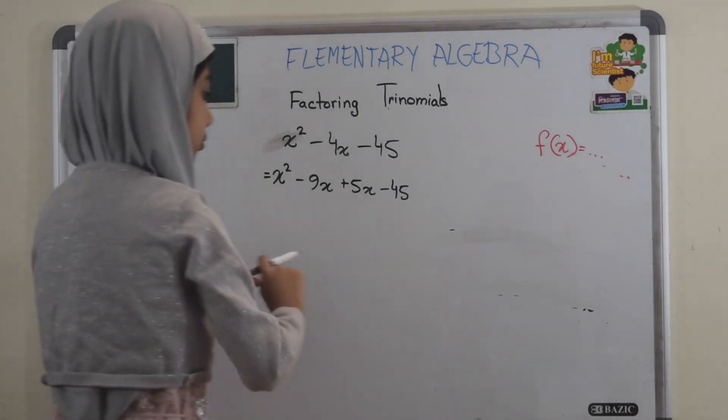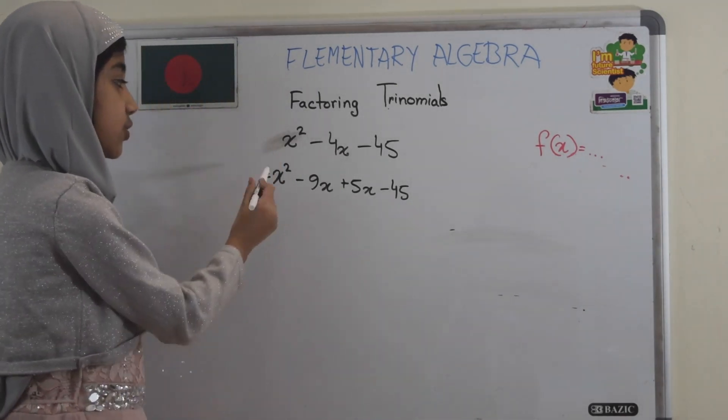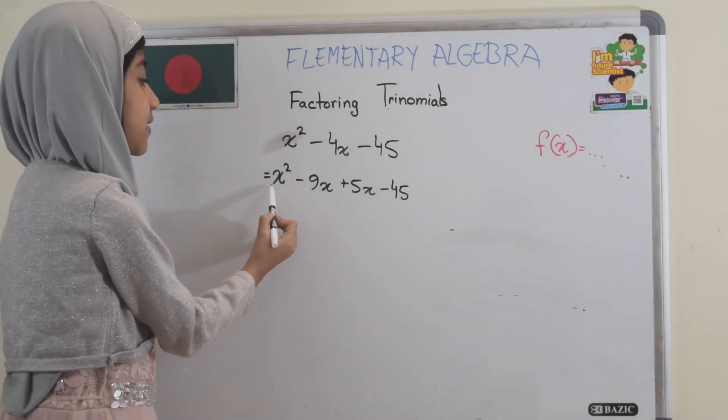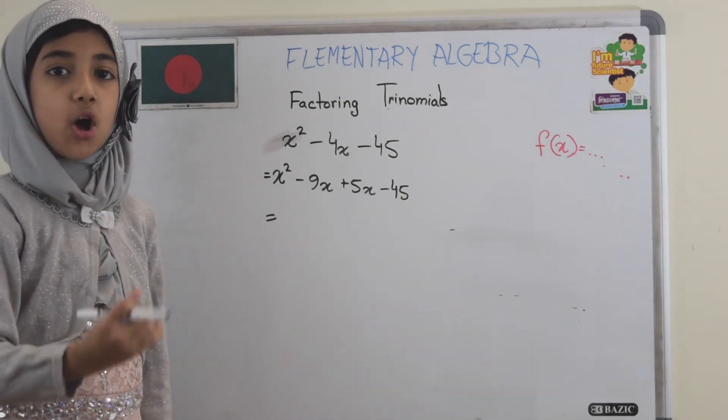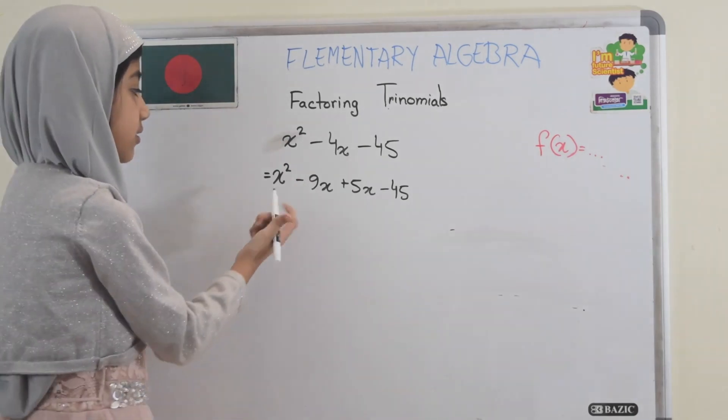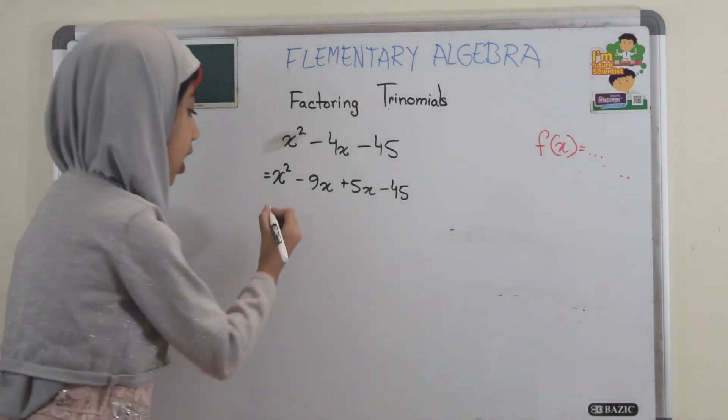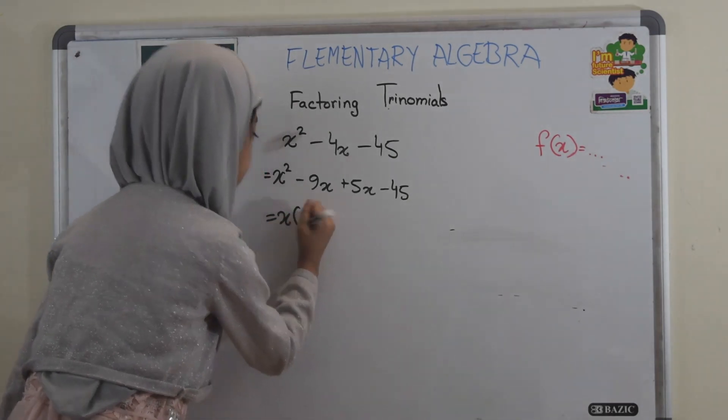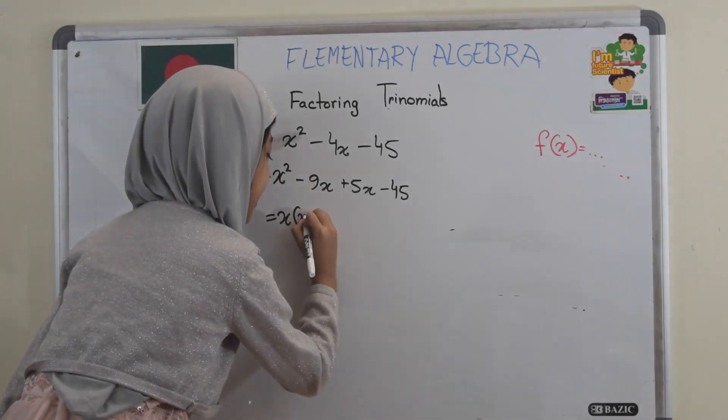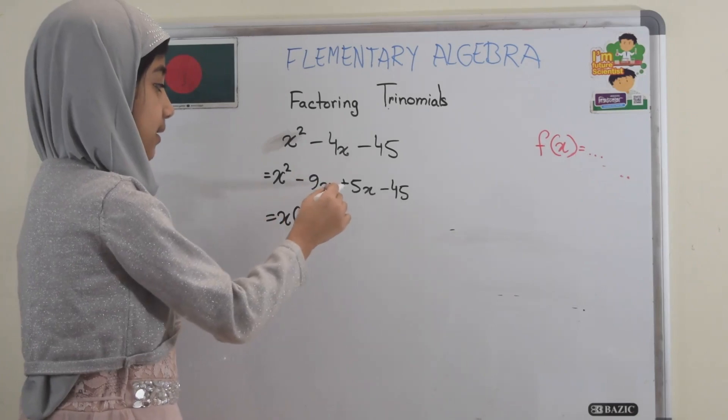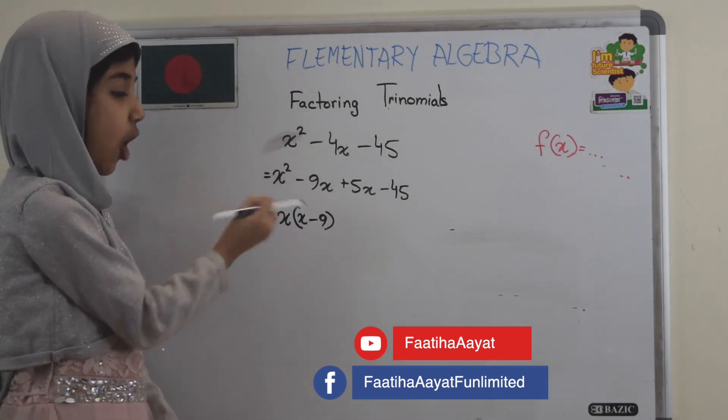So, now what we've got to do is we've got to see which two numbers or letters we can divide these two by. In algebraic language this is called taking away a common. So here we can see that we can take x as a common. So if we are taking x as a common, we've got to leave the x, start with the bracket, and x squared divided by x is x, and minus 9x divided by x is minus 9.